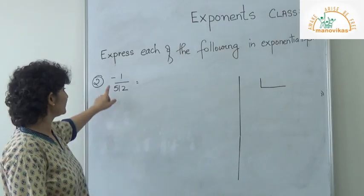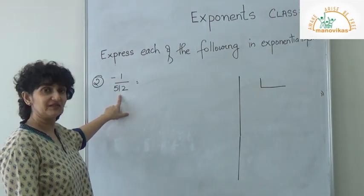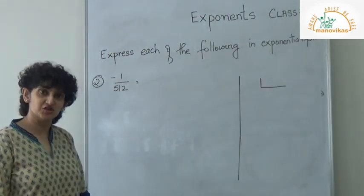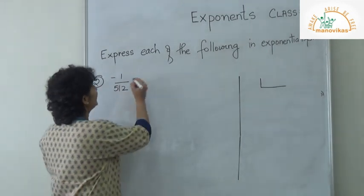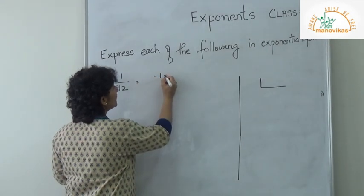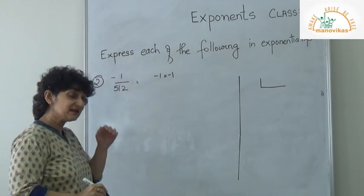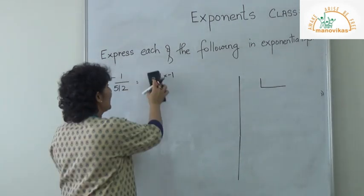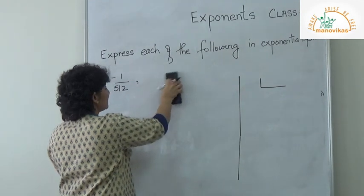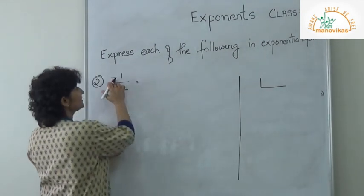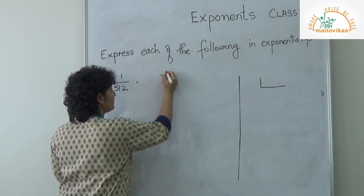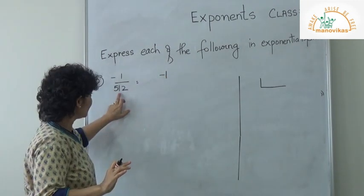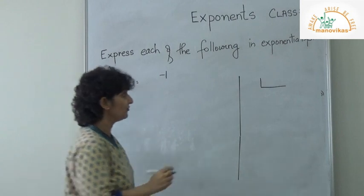Our next sum is minus 1 upon 512. You need to put it in exponential form. You know that any number of times you multiply 1, the answer remains 1. So let me write minus 1. Now let's factorize 512 — dividing by 2.